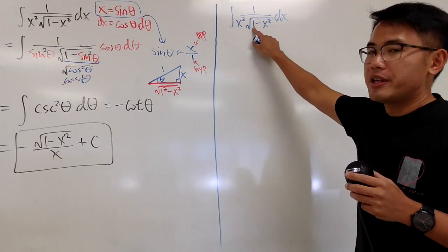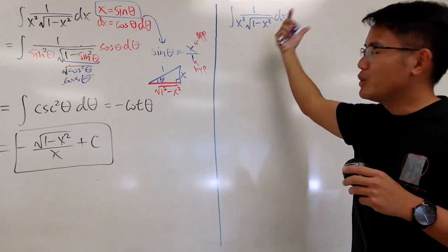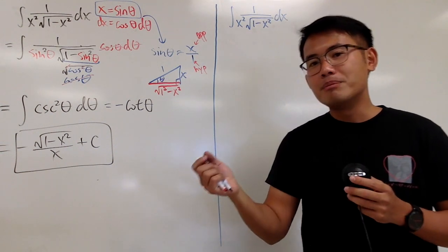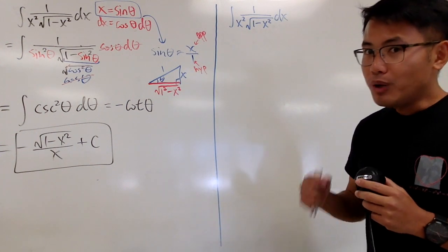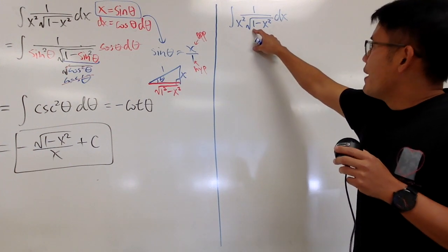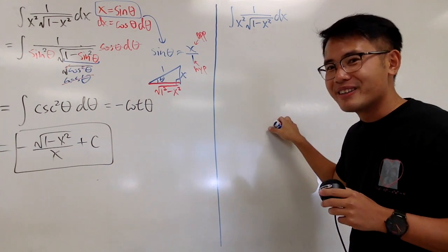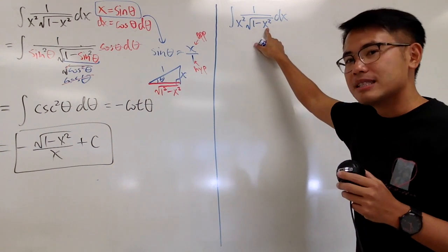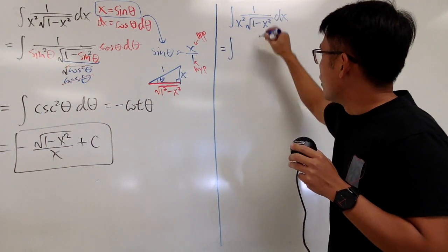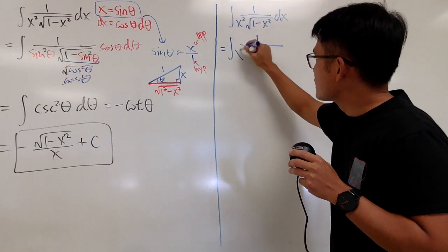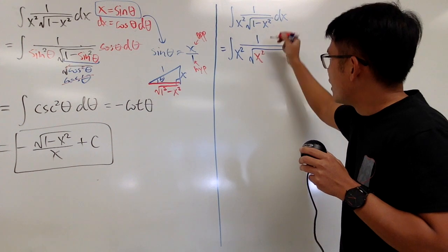Let's look at 1 minus x squared inside the radical. We can factor it as a difference of two squares: (1 plus x)(1 minus x), but that won't help. Instead, we factor out the highest power of x. This integral is 1 over x squared times the square root — let's factor out x squared from both terms inside the radical.